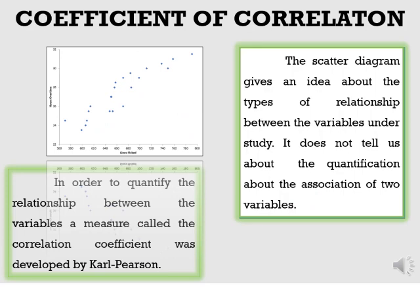The scatter diagram method just gives an idea about the types of relationship between the variables under study. It does not tell us about the quantification of the association of two variables. In such a case, we use the algebraic method — Karl Pearson coefficient of correlation.